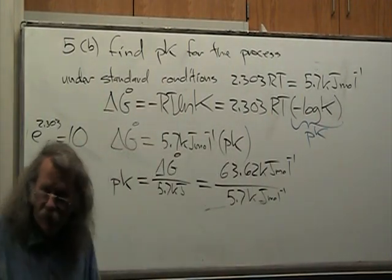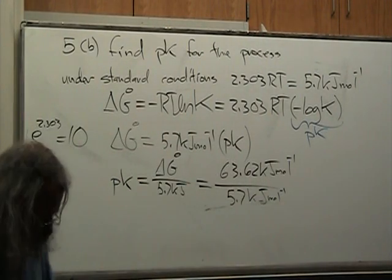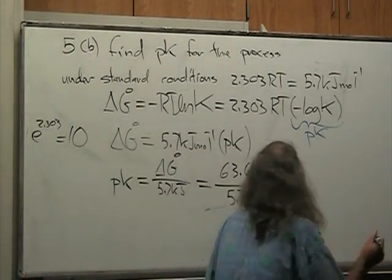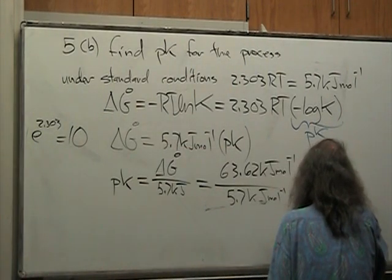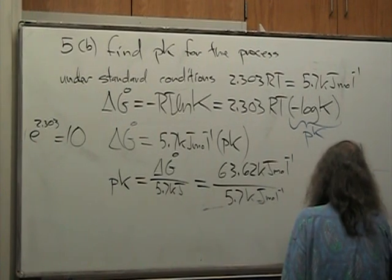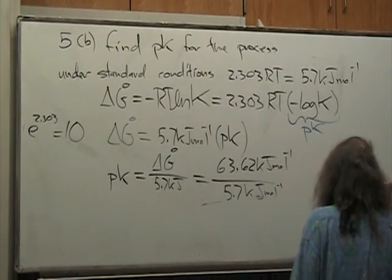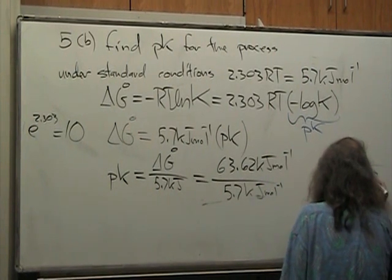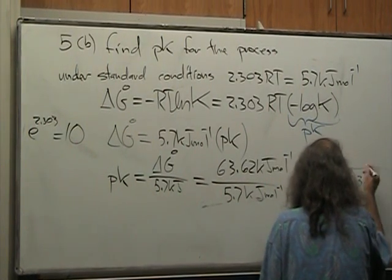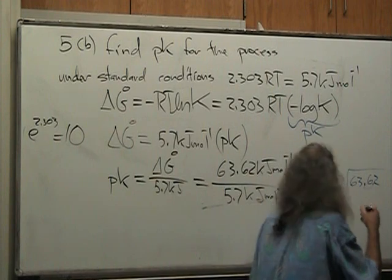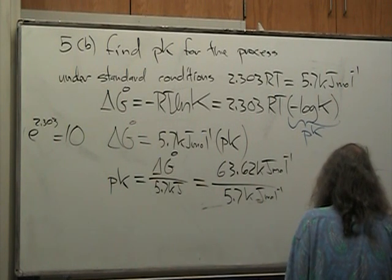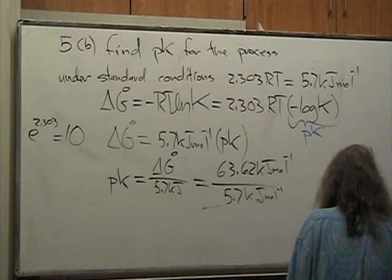Now we have to divide, and this is where we get our scratch paper out, and I guess I'll do it over here. I'm going to go 5.7 goes into 63.62, and I'll move this over 1 and this over 1, and 57 goes into 63 once, and it's 57, and 15 subtracts 7, and it's 6.